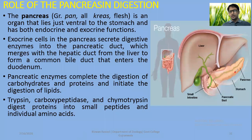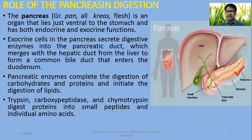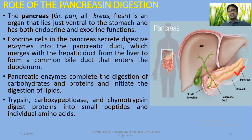The pancreas is known as a dual gland. Its exocrine secretion goes into ducts and is released into a cavity. The pancreas releases hormones as well as pancreatic juice, which is rich in digestive enzymes. The exocrine portion is larger and produces pancreatic juice, whereas the endocrine portion is smaller. Exocrine cells secrete digestive enzymes into the pancreatic duct.